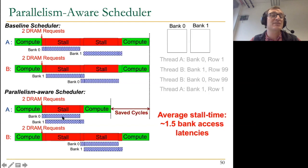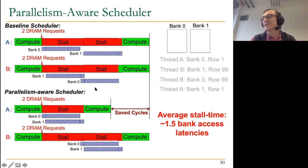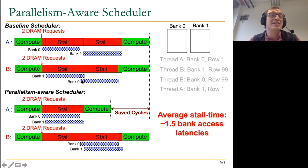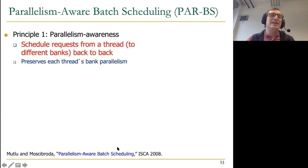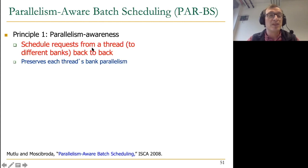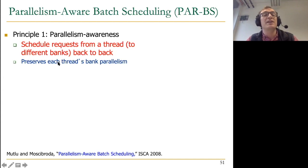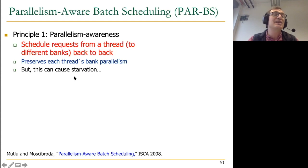The average stall time of threads is one and a half bank access latencies with the parallelism-aware scheduler, as opposed to two bank access latencies with the baseline scheduler. The parallelism-aware scheduler preserves bank-level parallelism of different threads, saving cycles by returning data to a thread much earlier than the baseline scheduler. This is called parallelism-aware batch scheduling. There are two principles: parallelism awareness, which schedules requests from a thread to different banks back to back, and request batching, which prevents starvation.